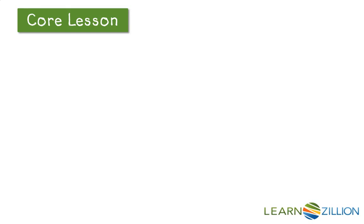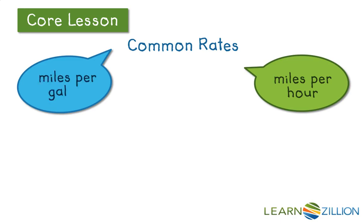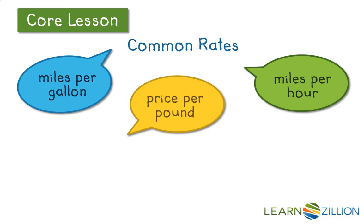To examine why a rate is different than a ratio, let's think of some common rates. Maybe you know of one that deals with speed — miles per hour, how fast a car, plane, or train is going. Or maybe you saw a commercial for a new car and they talked about miles per gallon — that's a rate of fuel economy. Or maybe you help do the grocery shopping and you know that produce and deli meats are given a price per pound. All of these are common rates: miles per gallon, price per pound, miles per hour.